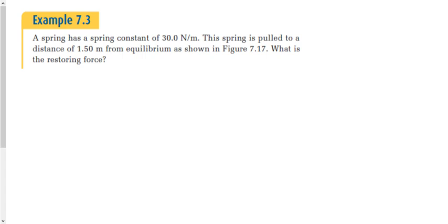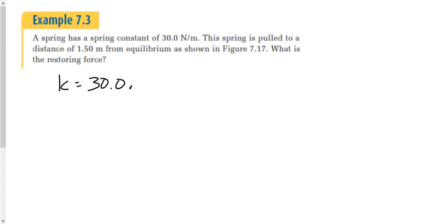Example 7.3: a spring has a spring constant of 30 Newtons per meter and is pulled to a distance of 1.5 meters from the equilibrium position. What is the restoring force? We're saying it simply stretched 1.5 meters — not that it flew 1.5 meters across the room. So K equals 30.0 Newtons per meter and X equals 1.5 meters.